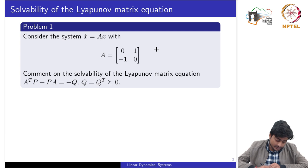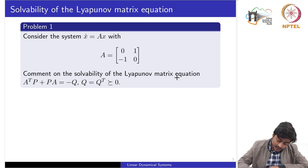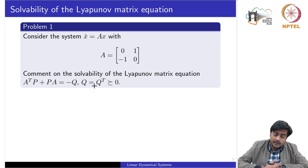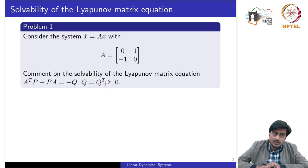We consider a linear homogeneous system with state matrix A = [0, 1; −1, 0]. We need to comment on the solvability of the Lyapunov equation. Note that in the standard stability result, Q is chosen as a positive definite matrix, but here Q is chosen as semi-definite. We will see the significance of selecting Q as a semi-definite matrix in the solution.